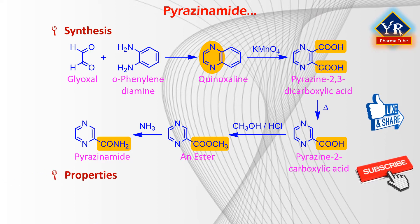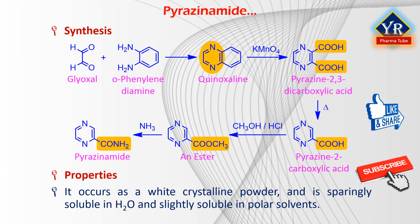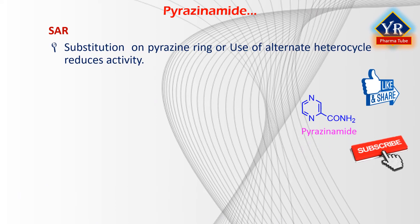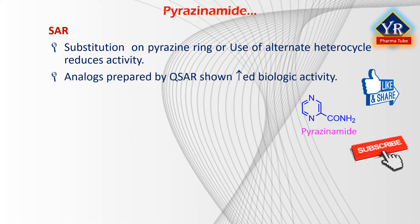Pyrazinamide occurs as a white crystalline powder that is sparingly soluble in water and slightly soluble in polar solvents. Structure-Activity Relationship: Substitution on the pyrazine ring or use of alternate heterocyclic aromatic rings has given compounds with reduced activity. More recently, using a quantitative structure-activity relationship, a series of analogues have been prepared with improved biological activity.